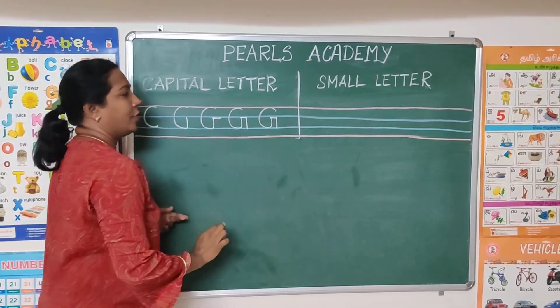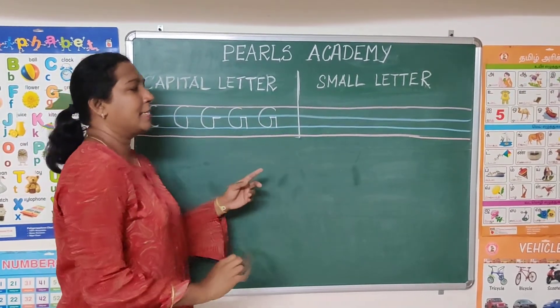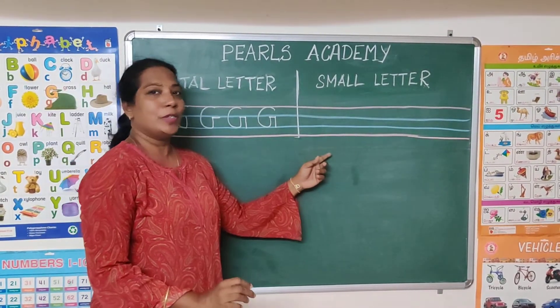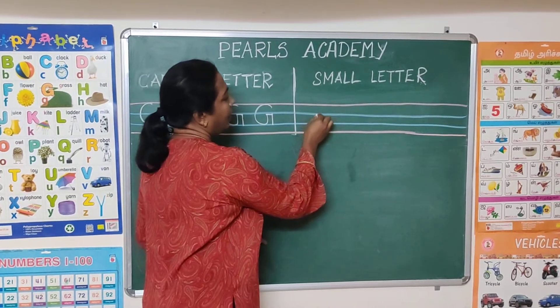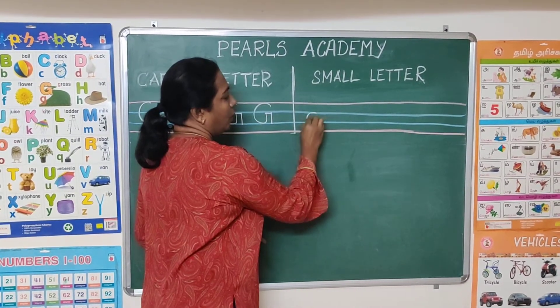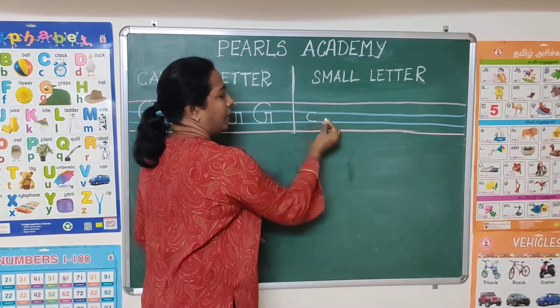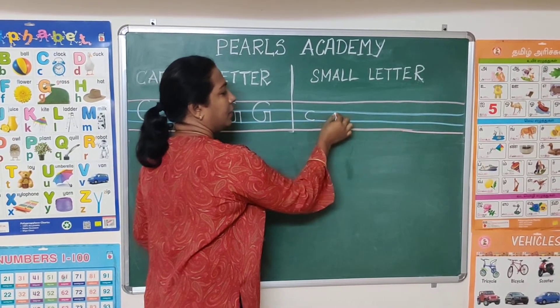Very good. Next, we go to small g. So you all know the same way — C curve.